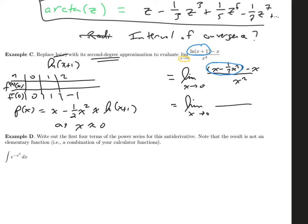So in my numerator, x minus a half x squared minus x, the x's are going to cancel. And I'll have just minus one half x squared divided by x squared. And it's easy to see that that is just negative one half. So that's the answer to the limit problem.